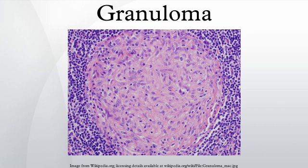Examples of the inaccurate use of the term granuloma are the lesions known as vocal cord granuloma, pyogenic granuloma, and intubation granuloma, all of which are examples of granulation tissue, not granulomas. Pulmonary hyalinizing granuloma is a lesion characterized by keloid-like fibrosis in the lung and is not granulomatous.